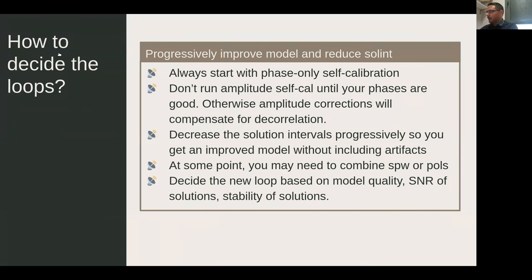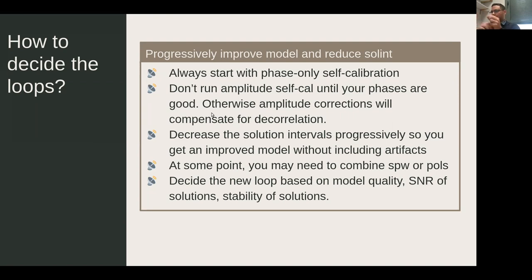Amplitude variations should be more or less smooth — there should not be sharp outliers. In CASA there are tasks to smooth solutions. If there are outliers going outside 30 percent or so, flag them as they are probably not real — though this depends on the quality of the original calibration. If there were large residuals in the original calibration, amplitude residuals in self-calibration can easily reach 10 to 20 percent or even more.